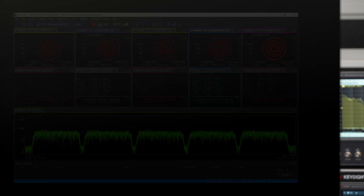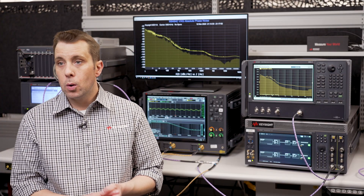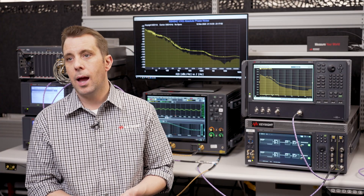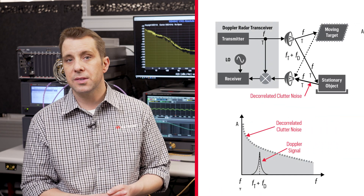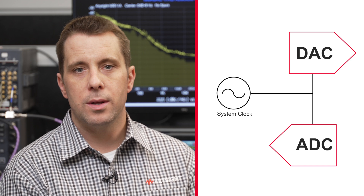Before we get into the measurements, I'd like to describe why phase noise is such an important metric for signal generators. Number one, for digitally modulated signals, phase noise materially impacts the error vector magnitude (EVM) percentage read on your receiver. Number two, when simulating a local oscillator in a radar system, phase noise impacts the radar's sensitivity and ability to resolve a target with a smaller radar cross-section. Third, when clocking electronic components such as an ADC or DAC, the effective number of bits and dynamic range of the converter are directly impacted by the phase noise of the signal generator.